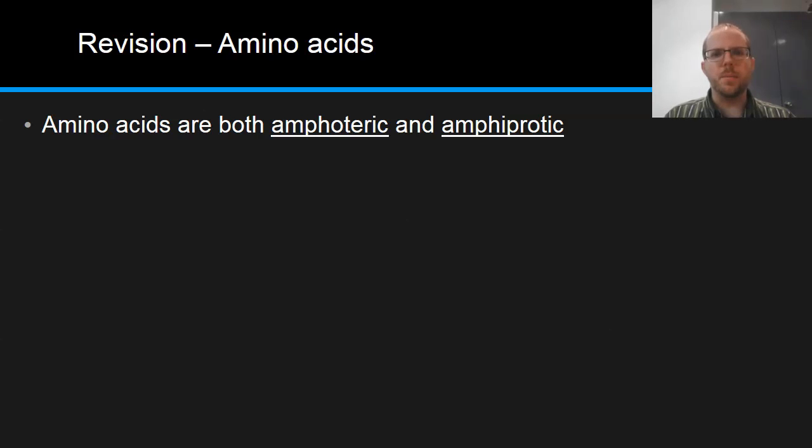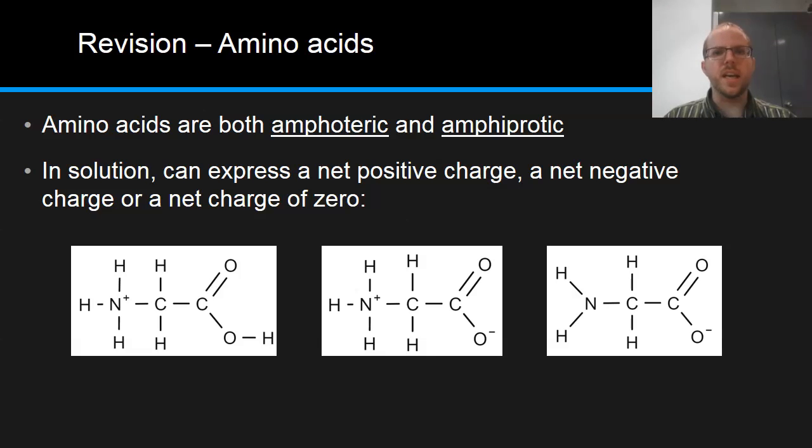Going back and doing some revision about amino acids. We recognize that amino acids are both amphoteric and amphiprotic. Amphoteric being able to react with both acid and base because of both functional groups, and also amphiprotic, able to both give and receive protons. In solution, if we take an amino acid, it can have a net positive charge, a net negative charge, or a net charge of zero. You can see in the examples underneath there. We have the cation on the left, we have the anion on the right, and the neutral zwitterion structure in the middle, which has both positive and negative charges, making it neutral overall.